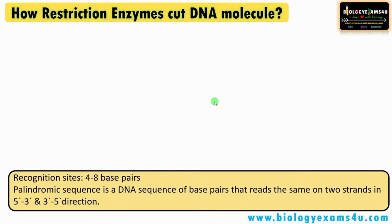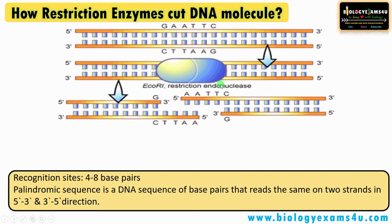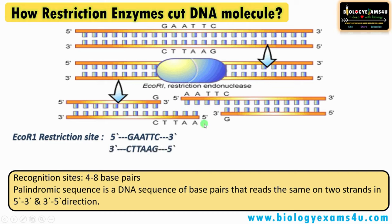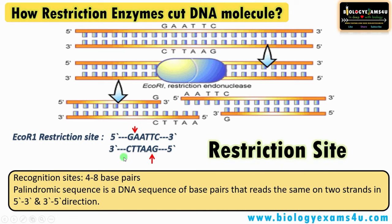How do restriction enzymes cut DNA? Let's take EcoRI as an example — a restriction enzyme isolated from Escherichia coli R1 strain. This endonuclease recognizes a specific sequence, GAATTC, called the recognition sequence or restriction site. This enzyme makes a cut after G on one strand and before G on the complementary strand. The recognition site is often 4 to 8 base pairs and is a palindromic sequence — GAATTC reads the same from 5' to 3' on both strands.